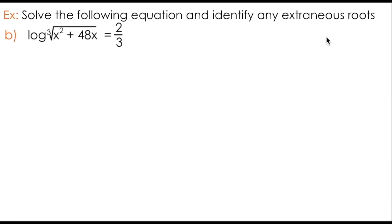Let's see if we have any extraneous roots in this case. Now this is a pretty scary looking equation, but remember anytime you have radical expressions with logarithms, it's always a good idea to rewrite them using your understanding of rational exponents. In this case, the cubed root of x squared plus 48x can be written as x squared plus 48x to the power of 1 over 3.